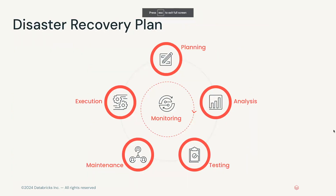That moves us into how you plan for disaster recovery and address these four pillars. It really comes down to five different activities. The first is planning. You need to decide how much downtime and how much data loss your business can tolerate. That gives you an initial starting point on the spectrum, and you can slide it left or right based on cost.